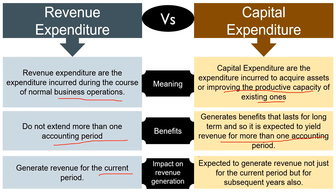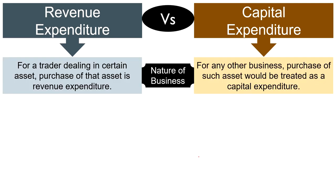We can understand this with an example. Suppose a firm replaces an old machine having productive capacity of 50,000 units per month with a new machine having productive capacity of 1 lakh units per month while consuming the same labor hours and material. The amount spent on buying such a machine is a capital expenditure, because it is going to generate revenue not just for the current period but also for years yet to come. Regarding Nature of Business, for a trader dealing in a certain asset — say furniture — purchase of that asset is a revenue expenditure.